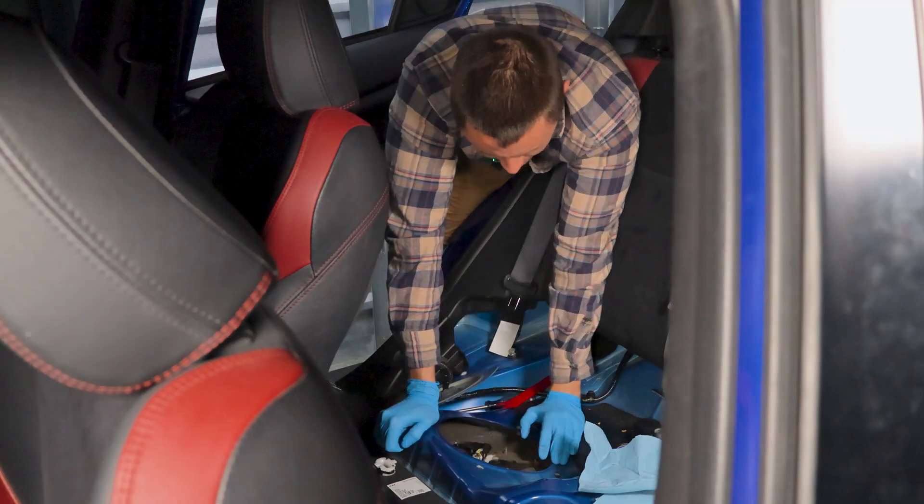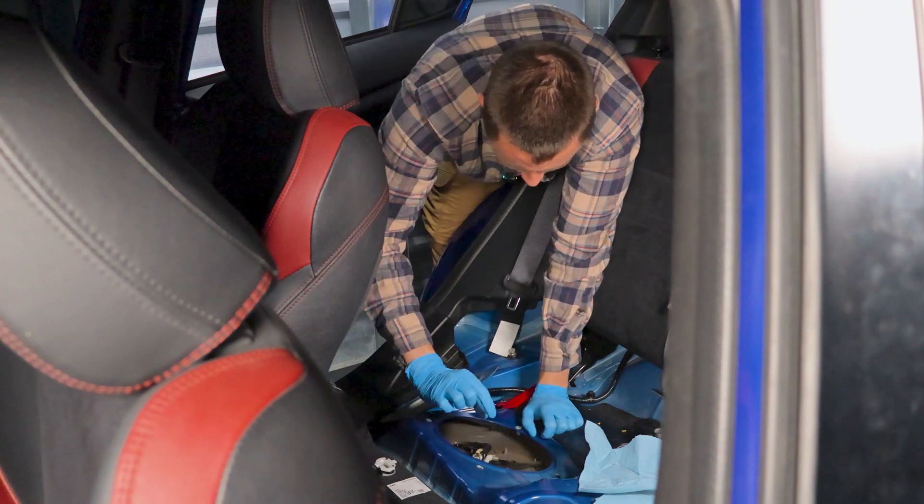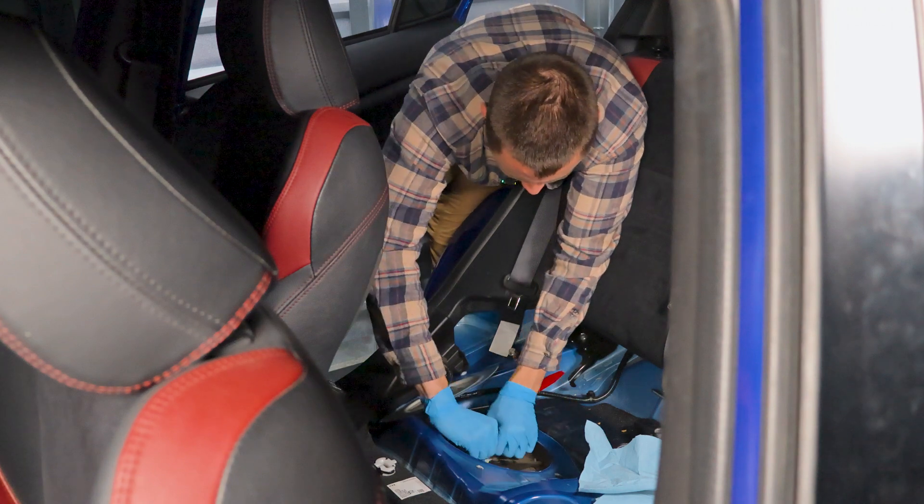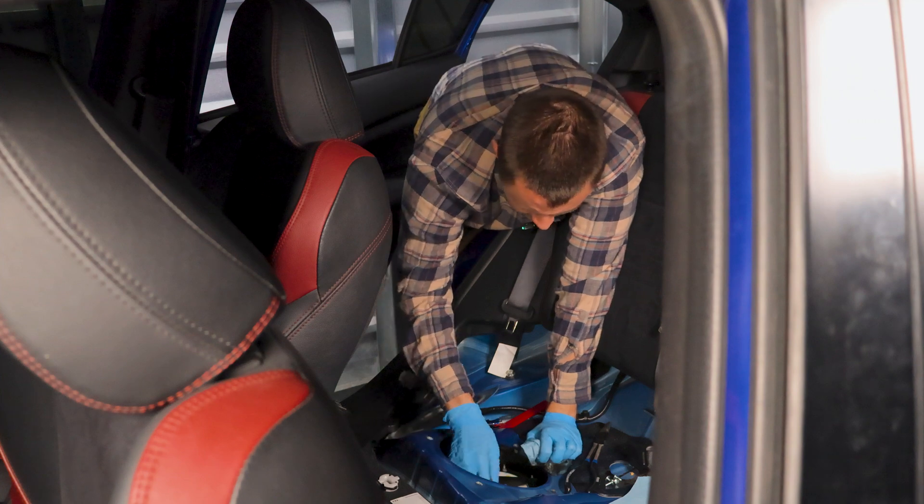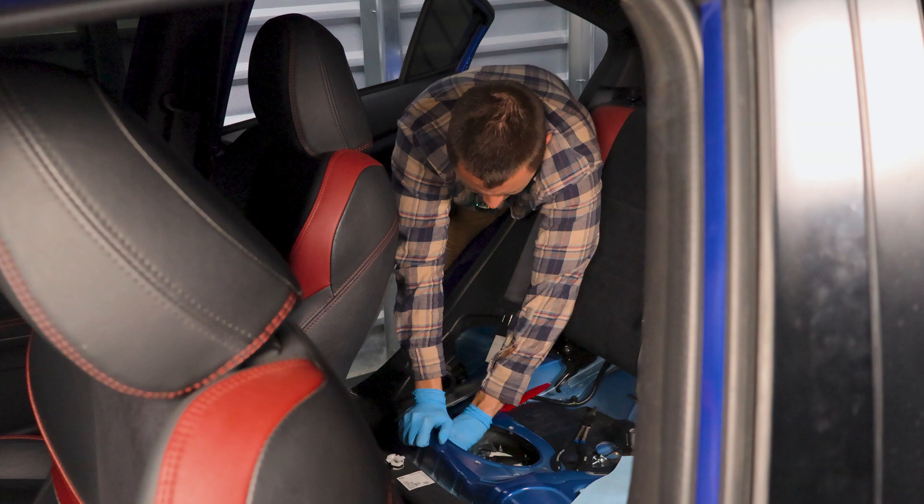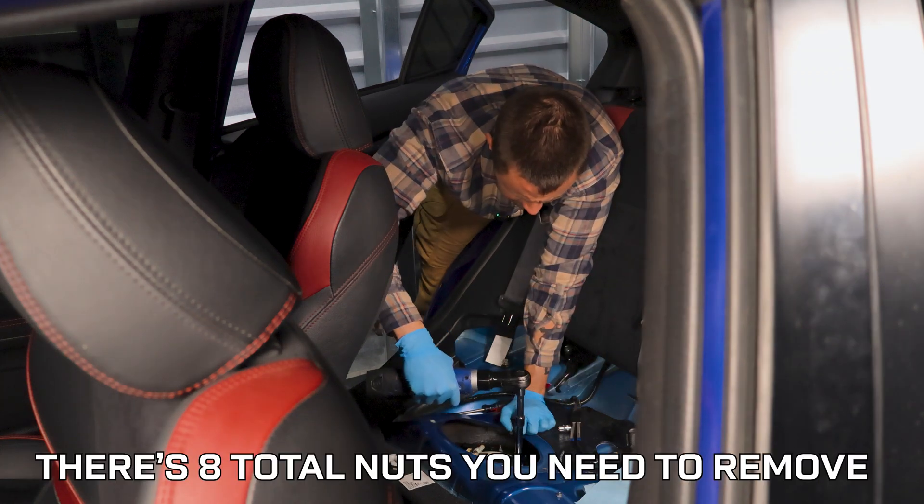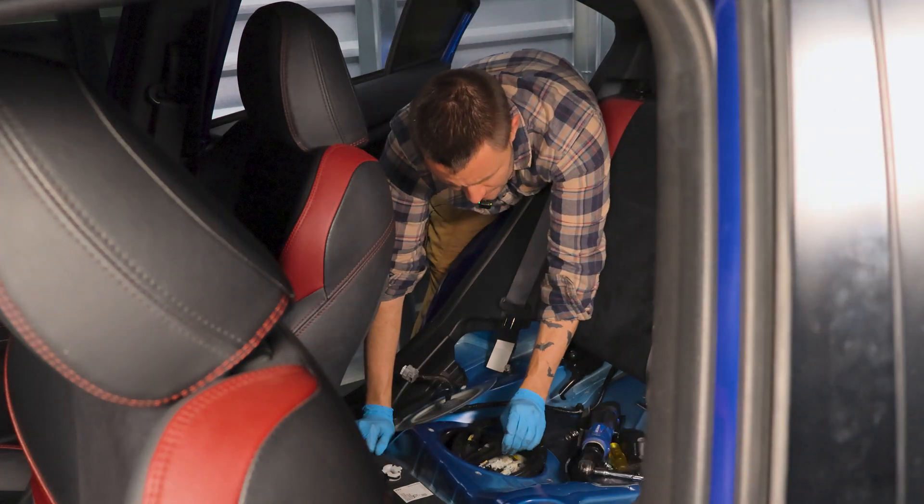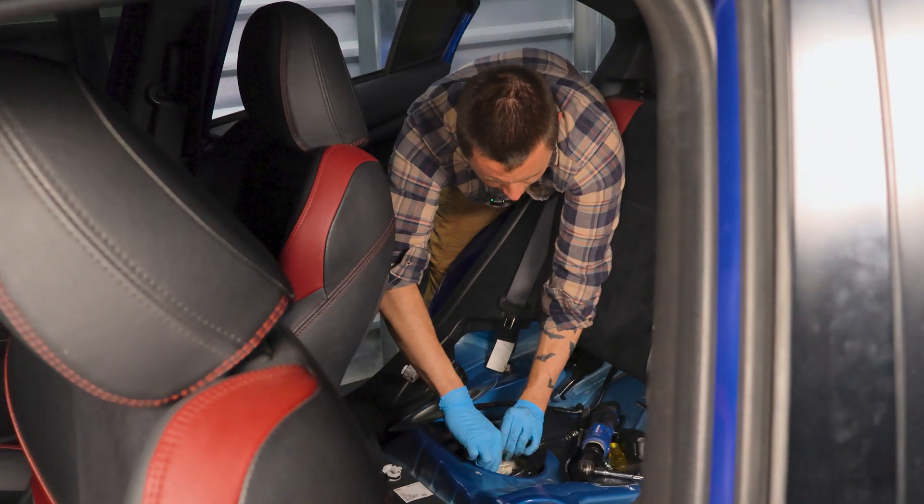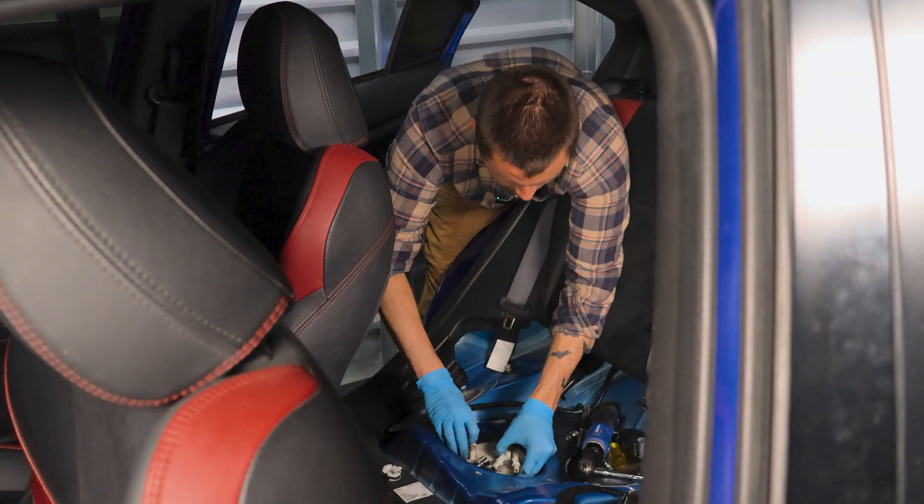Besides that electrical connector, there are three fuel lines that we need to remove. You pinch the tops and then just pull out. Now that the fuel lines are disconnected, we need to unbolt the tank from the actual sump. I think these are eight millimeter bolts. There's a total of seven. I'm gonna pull the ring out now. Now we can finally pull the actual fuel pump out to the little basket here.